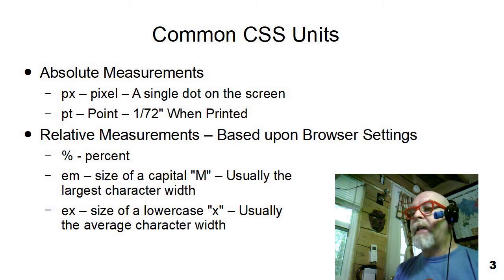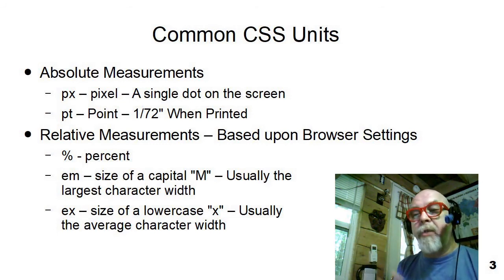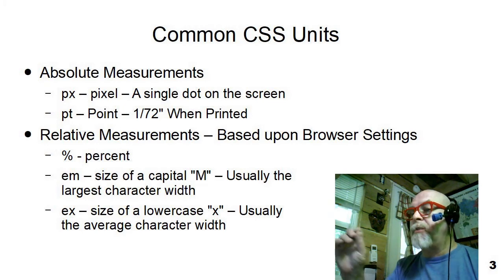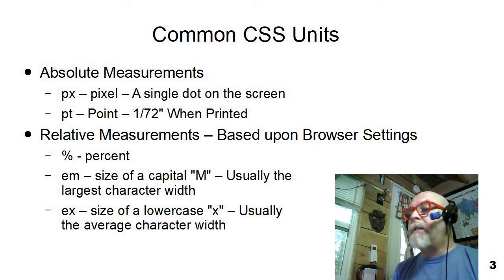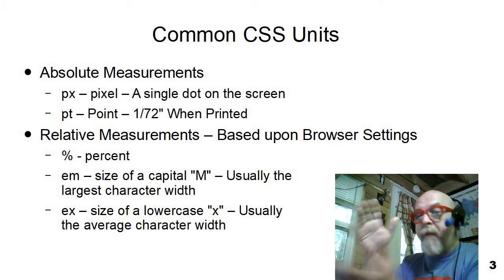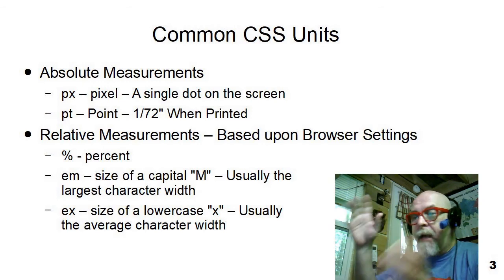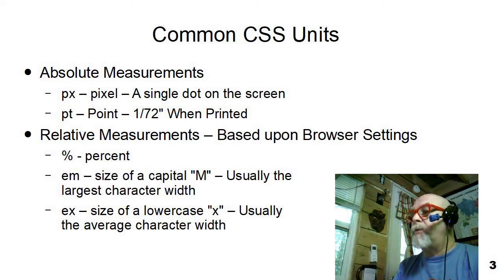There are lots of different ways in CSS to measure and to specify the size of things, but these are probably the five most common. The first two are absolute measurements — they describe an absolute amount of space on your screen. The PX pixel measurement, where you put a number and the letters PX in lowercase, describes the little dots on the screen. There's also an absolute measurement known as the point, or PT.